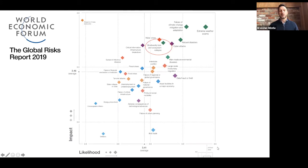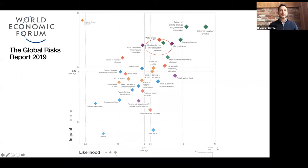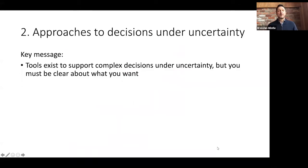This is a plot of the greatest risks to the global economy produced by the World Economic Forum in 2019, and you can see there in the top right-hand corner where you have high likelihood and high impact: biodiversity loss and ecosystem collapse are in the top five risks to the global economy, along with failure to adapt to climate, extreme weather events, natural disasters, and the like.